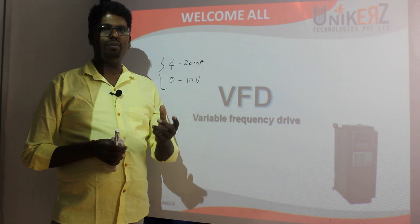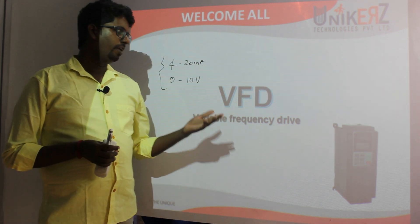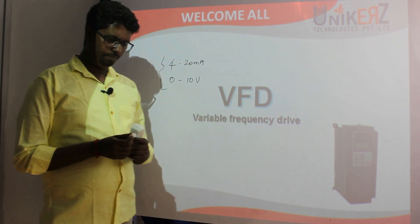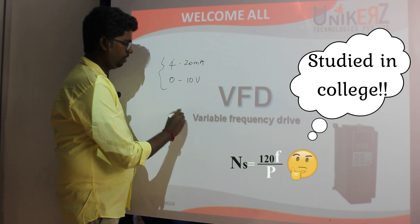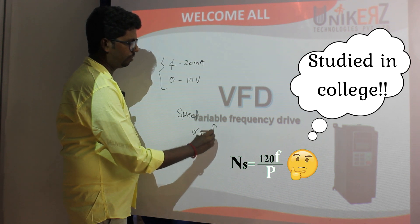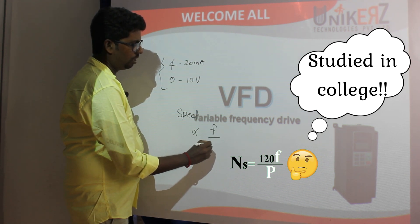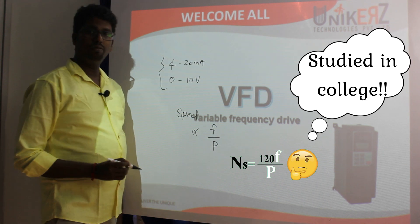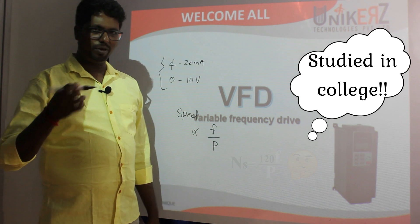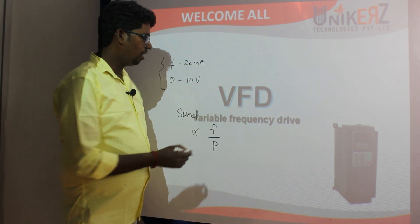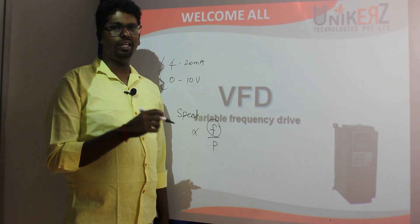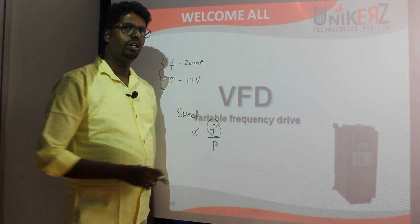We can control VFD. Speed is directly proportional to frequency and inversely proportional to the number of poles. Any motor has a designed number of poles. But we can vary the frequency of the input power supply to the motor.